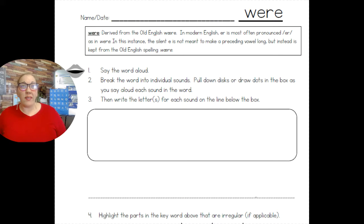Were is derived from Old English. But in modern English, 'er' is most often pronounced as 'er', as in 'were'. In this instance, the silent e that's at the end...